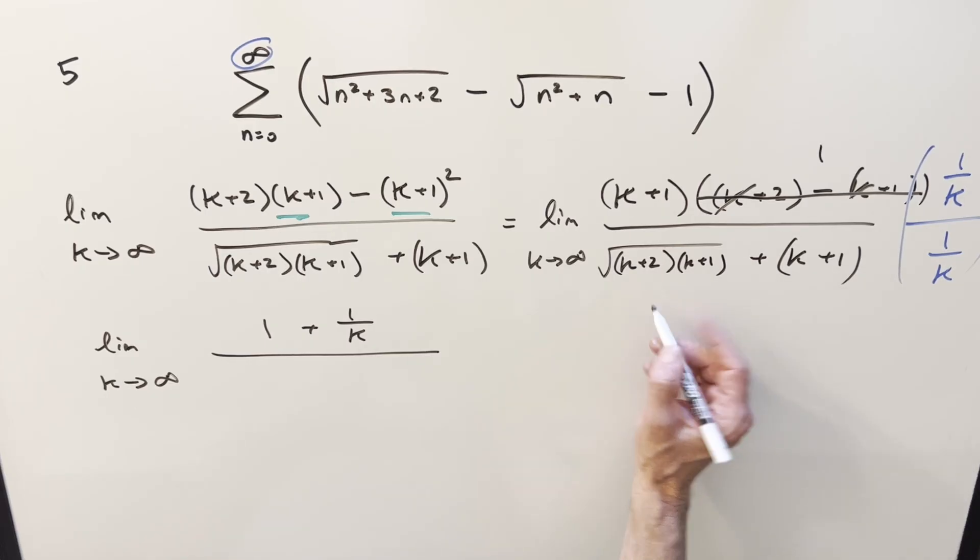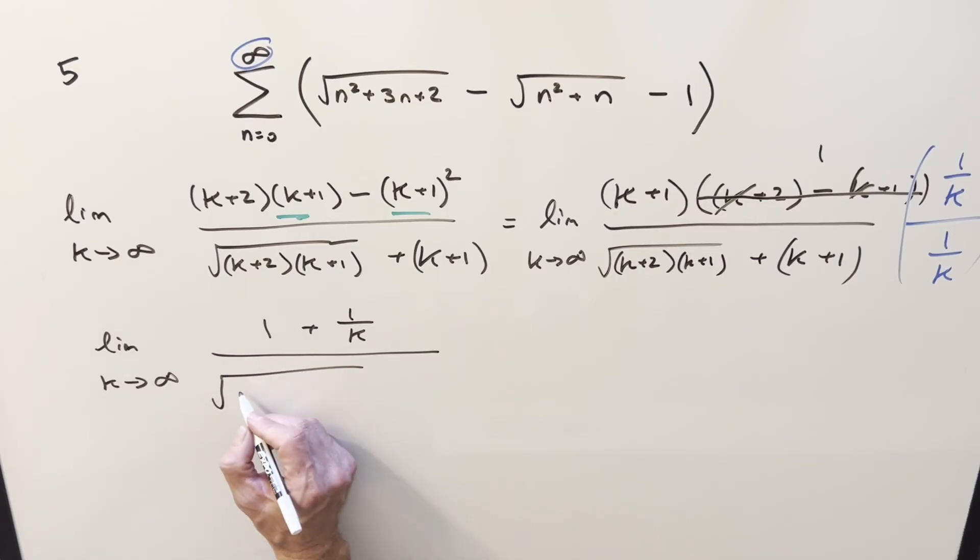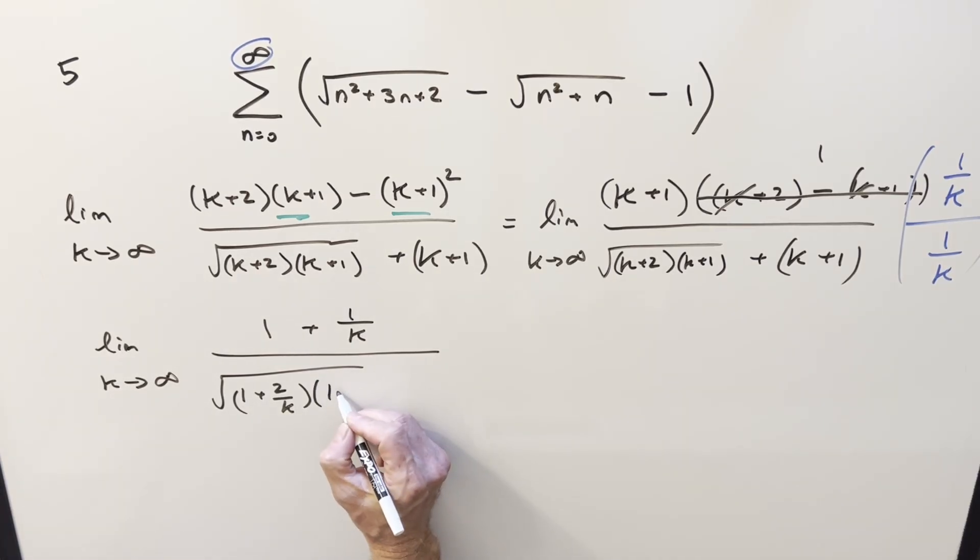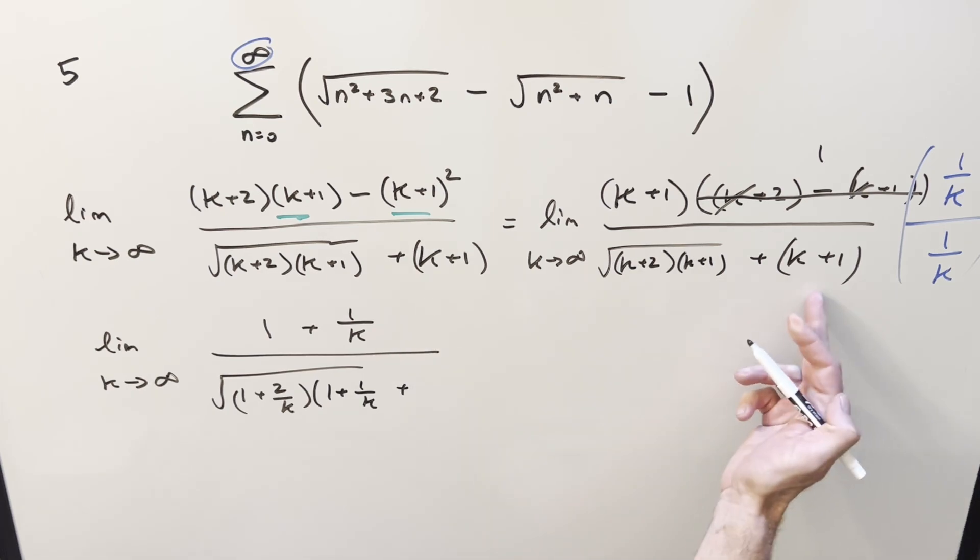So I can distribute a one over k into each term. So what's going to happen is it's going to be one plus two over k times, then on the next part, this is going to become the same kind of thing, one plus one over k. And then on our k plus one, that's the same thing, it's going to become just one plus one over k.